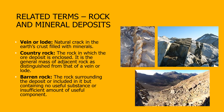Vein or lode is a natural crack in the earth's crust filled with minerals. A mineralized zone has more or less regular development in length, width and depth to give it a tabular form. Country rock is the rock in which the ore deposit is enclosed — the general mass of adjacent rock as distinguished from that of a vein or lode. Barren rock is the rock surrounding the deposit or included in it but containing no useful substance or an insufficient amount of useful component.